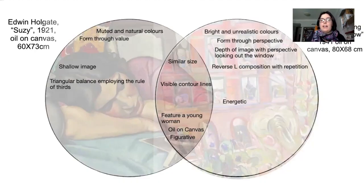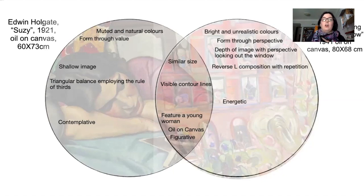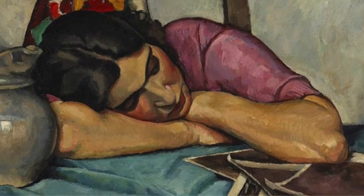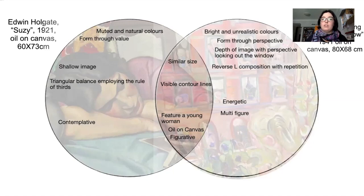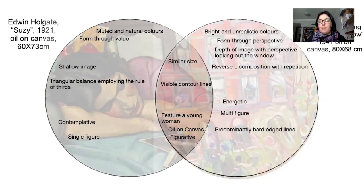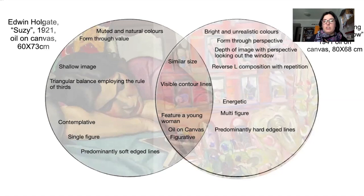McCloy's piece is very energetic — you can feel that from the wonky lines — there's just a sense of the city, whereas Holgate is very contemplative. If you look at the expression on Susie's face, her eyes are almost closed and you can imagine a sort of resignation. McCloy's piece is multi-figure — there are many different people in it, not just the girl in front — whereas Holgate has a single figure. There are very hard-edged lines predominantly throughout McCloy's piece, through the straight rectangular lines of the building, whereas the lines in Holgate's piece are very soft-edged with lots of curves.